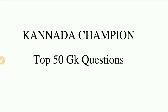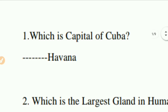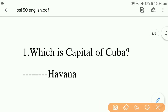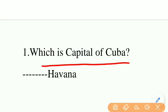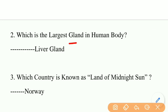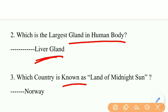Hi friends, welcome to Canada Champion. In this video, let's discuss the top 50 GK questions for our upcoming exams. First question: What is the capital of Cuba? The capital of Cuba is Havana. Which is the largest gland in the human body? The answer is the liver — the liver is the largest gland in the human body.